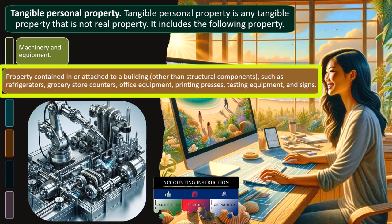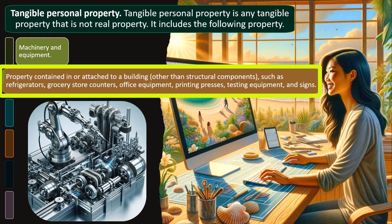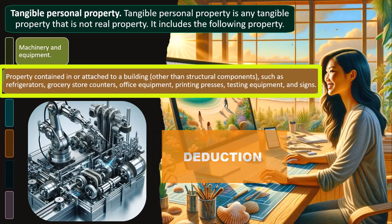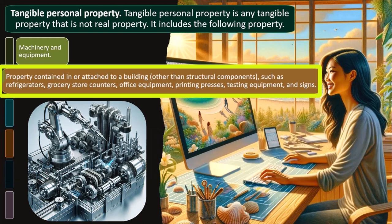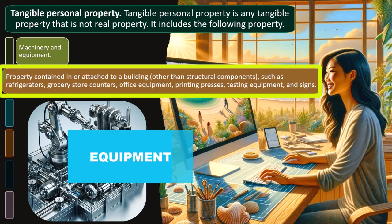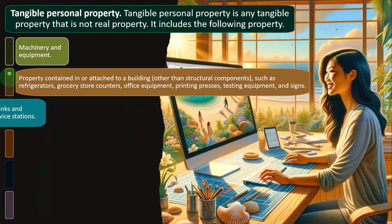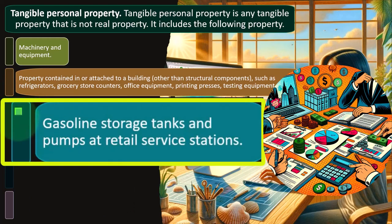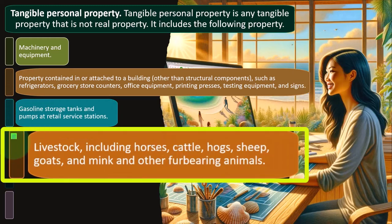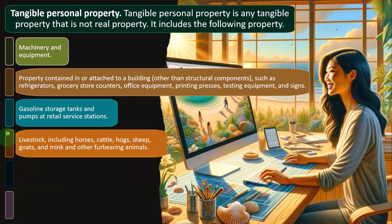So like a refrigerator, clearly we'd like to depreciate it over the life of the equipment, not the building, because we get the deduction sooner. More complex things come into play with something like an air conditioning system — you can argue whether it's part of the building or a separate piece of equipment. What's going to be the useful life of the sprinkler system within a building? Also included: gasoline storage tanks and pumps at retail service stations; livestock including horses, cattle, hogs, sheep, goats, and mink and other fur-bearing animals.